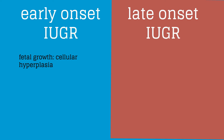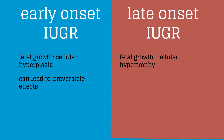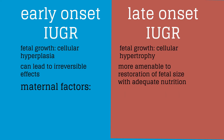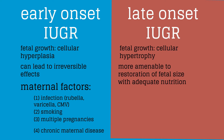Early in pregnancy, fetal growth is primarily through cellular hyperplasia. Thus, early onset IUGR can lead to irreversible decreases of organ size and possible function. Later in the pregnancy, fetal growth is primarily secondary to cellular hypertrophy, so IUGR at this point is more amenable to restoration of fetal size with adequate nutrition. Maternal factors associated with early onset IUGR include maternal infections such as rubella, varicella, or CMV, smoking, multiple pregnancies, and chronic maternal disease. Late onset IUGR, on the other hand, is usually secondary to uteroplacental insufficiency.